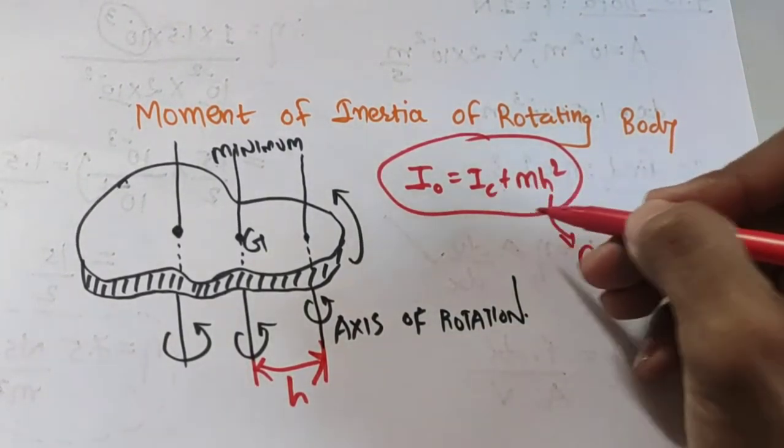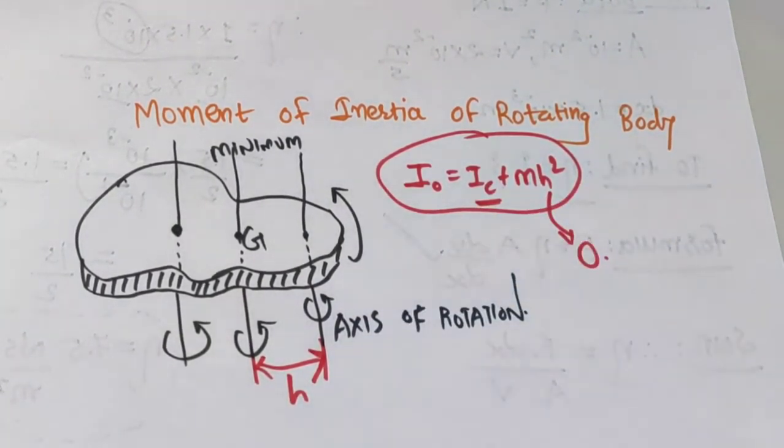But if h is zero and this is the central axis, so the moment of inertia is minimum.